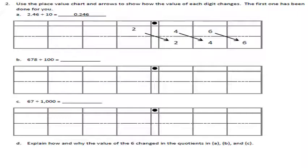Question two is about dividing. Division is the inverse of multiplication, so when we multiply by ten digits move left one place value per multiple of ten. In division, since it's the opposite, digits move to the right one place value for every operation of ten. The first example shows two and forty-six hundredths divided by ten: two tenths, four hundredths, six thousandths — so the result is zero point two four six, or two hundred forty-six thousandths.